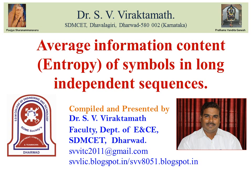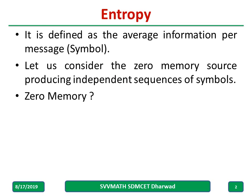Welcome to my channel. In this video we are going to derive the equation for entropy, or average information contained in symbols in a long independent sequence. Basically, entropy is defined as the average information per message, or you can say average information per symbol. Let us consider the zero memory source producing independent sequences of symbols.